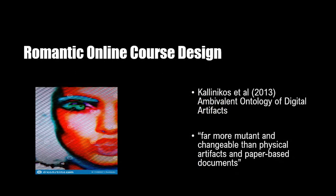In 'The Ambivalent Ontology of Digital Artifacts,' Kalinikos et al. help us get a handle on the nature of digital artifacts by focusing on the features and affordances that distinguish them from physical entities and other cultural records. The main difference they argue is that digital artifacts are far more mutable and changeable than physical artifacts and paper-based documents. This is certainly the case in online courses, where mutability and the potential for constant revision and change is rendered by the main possibilities, potentialities, and affordances of the digital assets we have at our disposal.